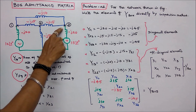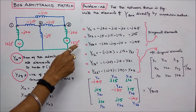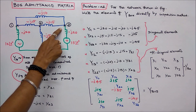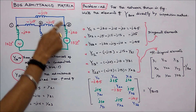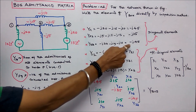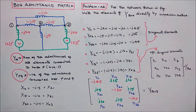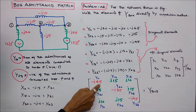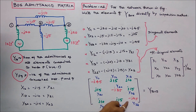Y33 also has three elements: minus J20, minus J15, and minus J10, which equals minus J45. So the diagonal elements are: Y11 equals minus J45, Y22 equals minus J35, Y33 equals minus J45.